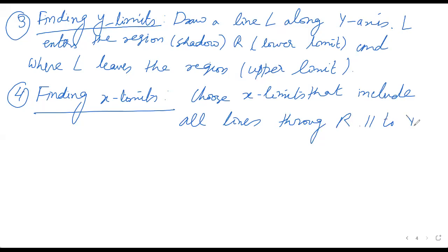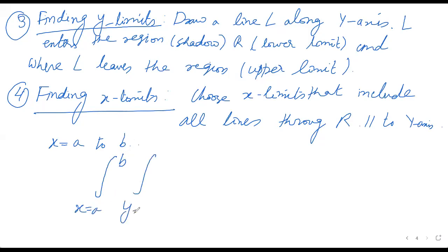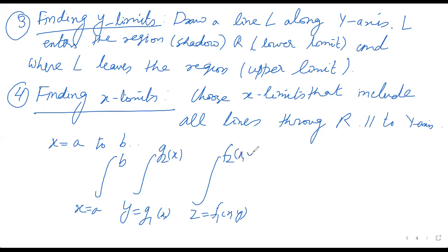For the x-limits, you take limits that include all the lines through region R parallel to the y-axis. Let's say x equal to a to b. So finally it will become: x equal to a to b, y equal to g1(x) to g2(x), and z equal to f1(x,y) to f2(x,y), with f(x,y,z) dz dy dx. This will give you the value.